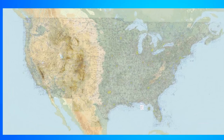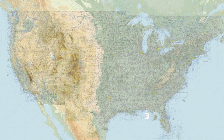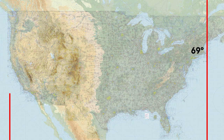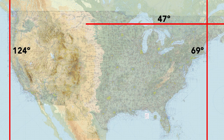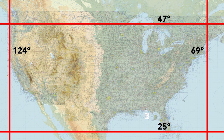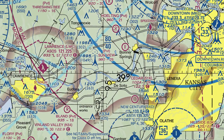Here it is on the sectional chart for the entire country. It's roughly bounded on the east and west by the 69-degree west and the 124-degree west lines of longitude. North and south, it's bounded approximately by the 47-degree north and 25-degree north lines of latitude. If we zero in roughly in the center of the country, we zoom into the border between Kansas and Missouri, where the 95-degree west longitude intersects the 39-degree north latitude — pinpointing a spot on the Earth's surface just west of Kansas City.